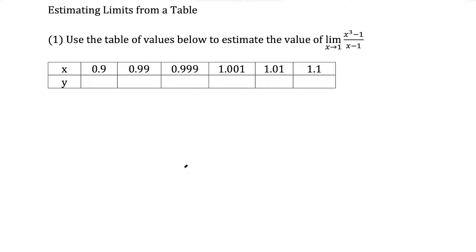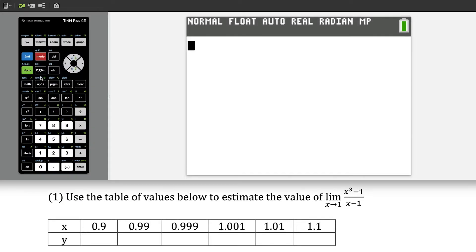What's up? I'm Vin and today I want to show how to estimate limits from a table. For this first question, we're going to use the table of values below to estimate the value of the limit as x approaches 1 of x to the third minus 1 over x minus 1.